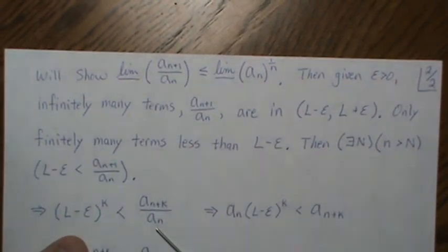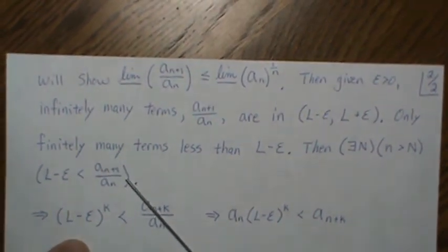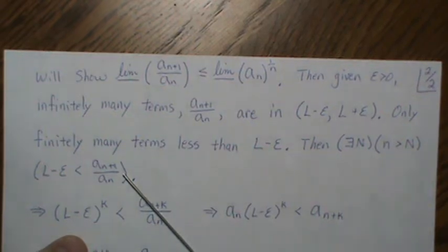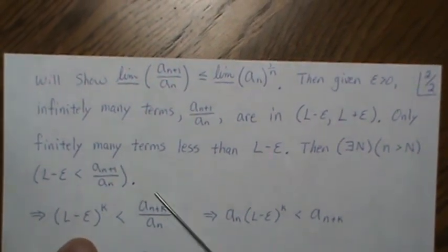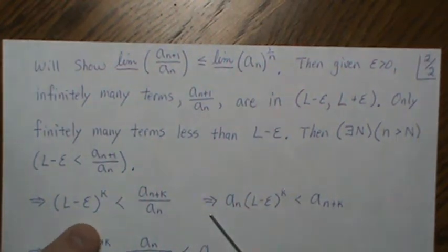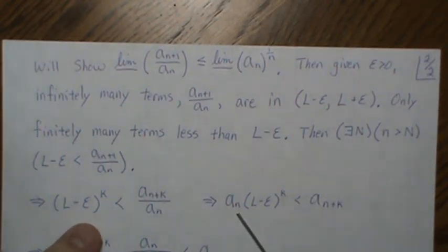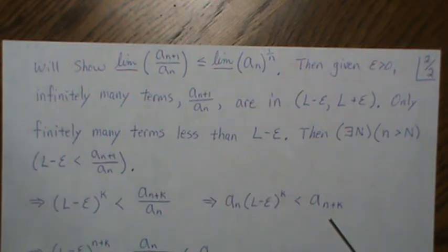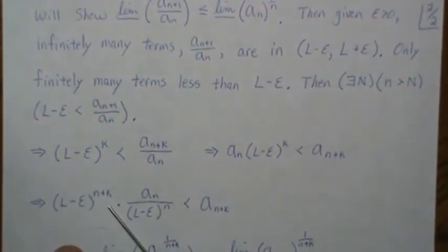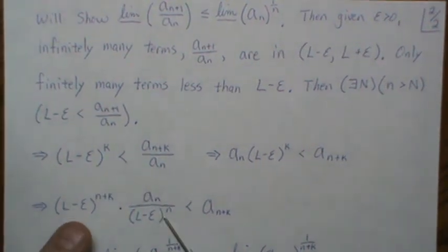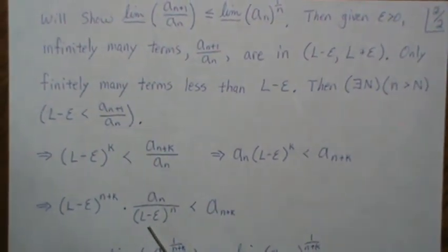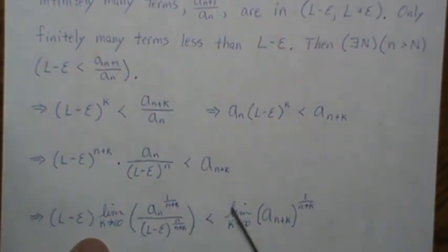We can do the same trick as before: multiply this side by A_{N+2} / A_{N+1}, and the other side by L minus epsilon, and do that K times. We get cancellations and arrive at the same type of inequality. This implies that, after multiplying across, A_N times (L − ε)^K is less than A_{N+K}. Now we multiply the left side by 1, which is (L − ε)^N, and we get our expression. Then we take the (N + K)th root of both sides and let K go to infinity.